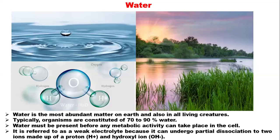Let's quickly highlight what water is. We know that water is the most abundant matter on earth and also in all living organisms. Typically each organism is constituted of about 70 to 90 percent water, and water must be present before any metabolic activity can take place in the cell. Enzymatic reactions cannot take place in living organisms except the medium contains water, so it is referred to as a weak electrolyte because it undergoes a partial dissociation.